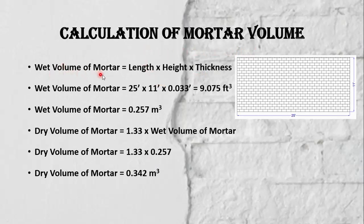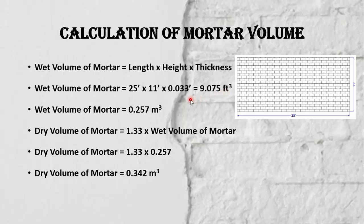The wet volume of mortar equals length multiplied by height multiplied by thickness. Here we have length 25 feet, height 11 feet, and mortar thickness 0.03 feet, so the volume becomes 9.075 cubic feet. Converting to SI units, it becomes 0.257 cubic meters.